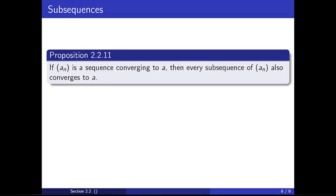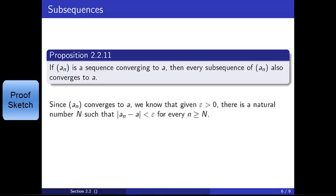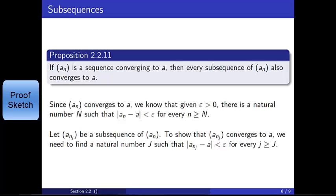Let a_n be a sequence converging to a real number a. Then every subsequence of a_n also converges to a. This should make intuitive sense: if the terms of a_n eventually get close to a and stay close to a, then the same behavior carries over to subsequences, since we haven't changed the order in which the terms appear. More concretely, we can use the definition of convergence. Given that a_n converges to a, we know that for any epsilon > 0 there is a natural number N such that |a_n - a| < epsilon whenever n ≥ N.